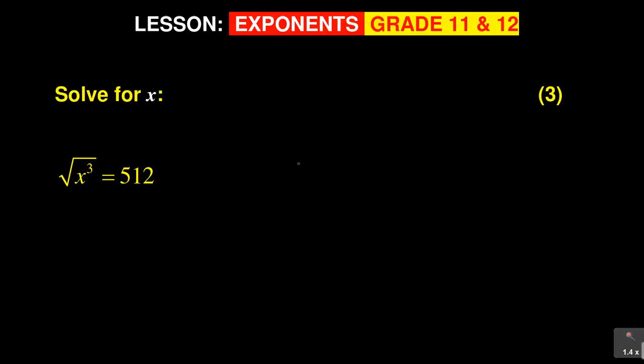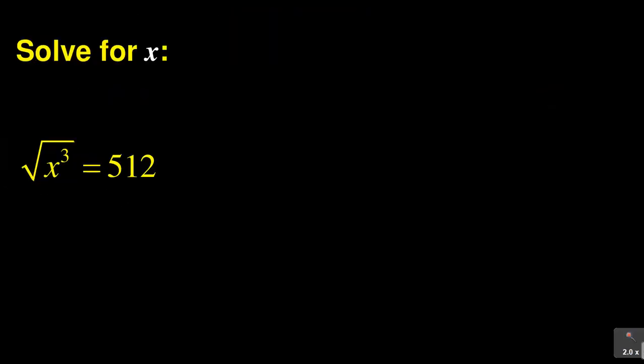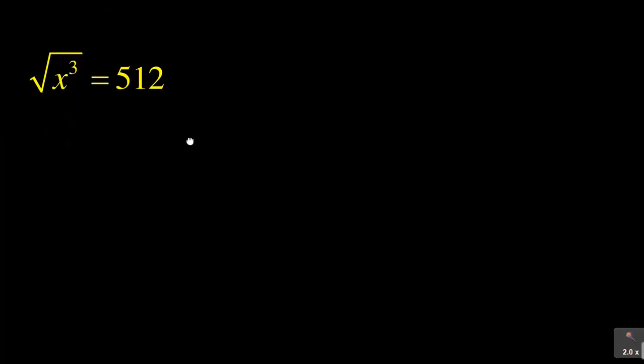You're given just a simple problem. It's 3 marks. It was taken from a previous paper and it says we need to solve for x given that. So now the question is what are we given? We're given that square root of x cubed is equal to 512. Now we need, we are expected to solve for x.